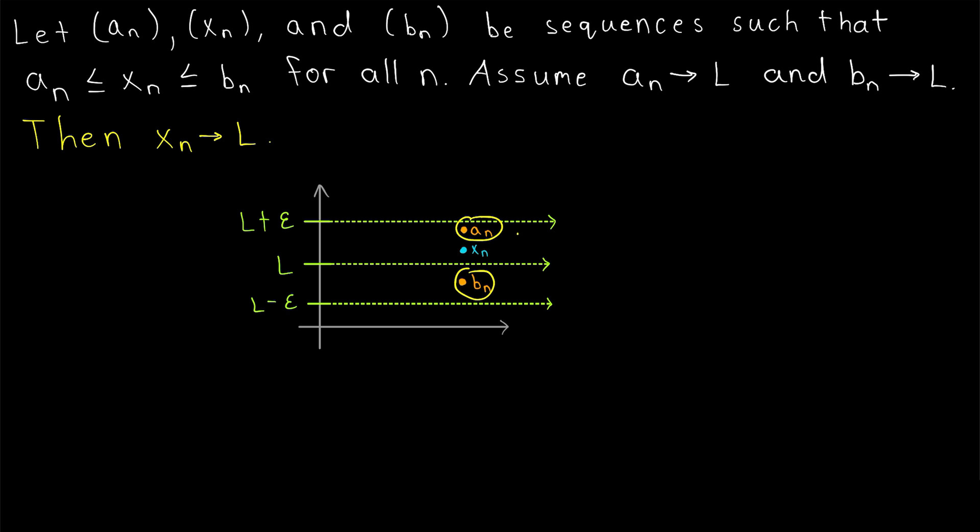Then, since the terms a_n and b_n both converge to L, and x_n is being squeezed between them, it seems pretty reasonable to suspect that x_n will also be forced to converge to L. It's a pretty straightforward proof, so let's quit the dilly-dallying and prove it.